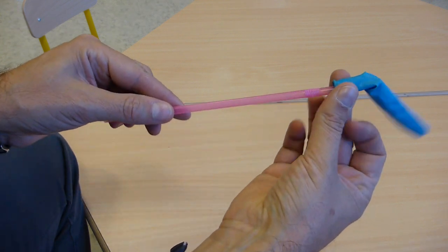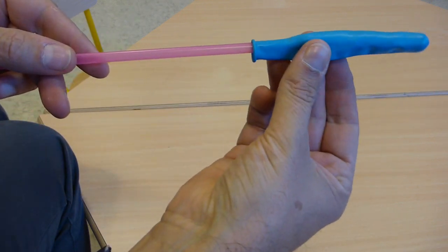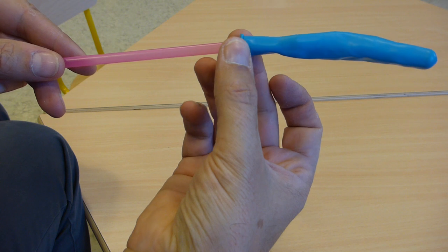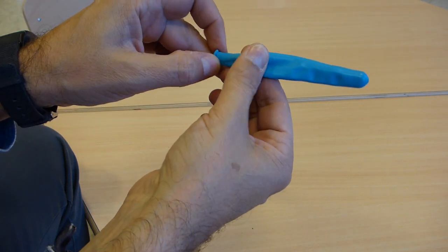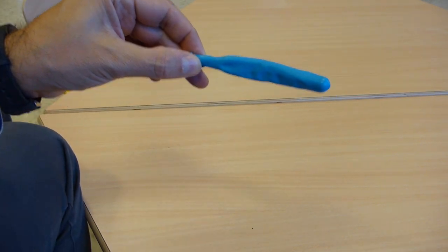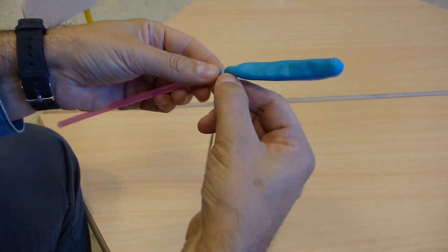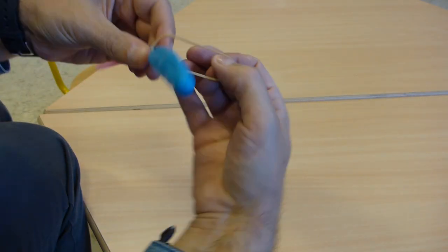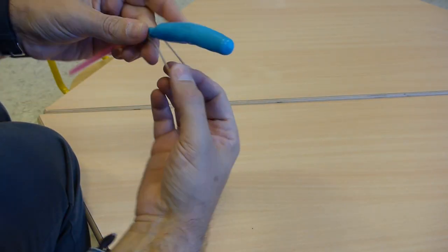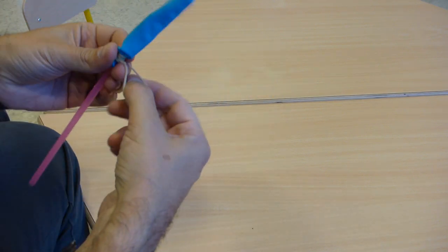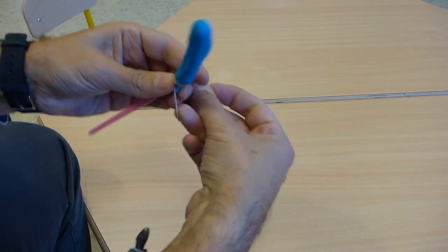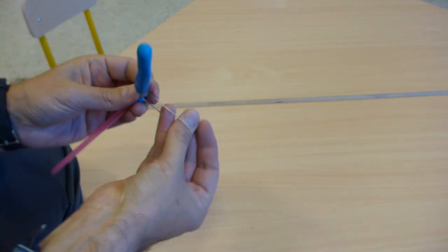Now you take the straw and the balloon. Slip the balloon over the straw. The opening of the balloon shall sit at the straw's concertina type hinge. Then take the rubber band and wrap it around the neck of the balloon in order to attach it to the straw.